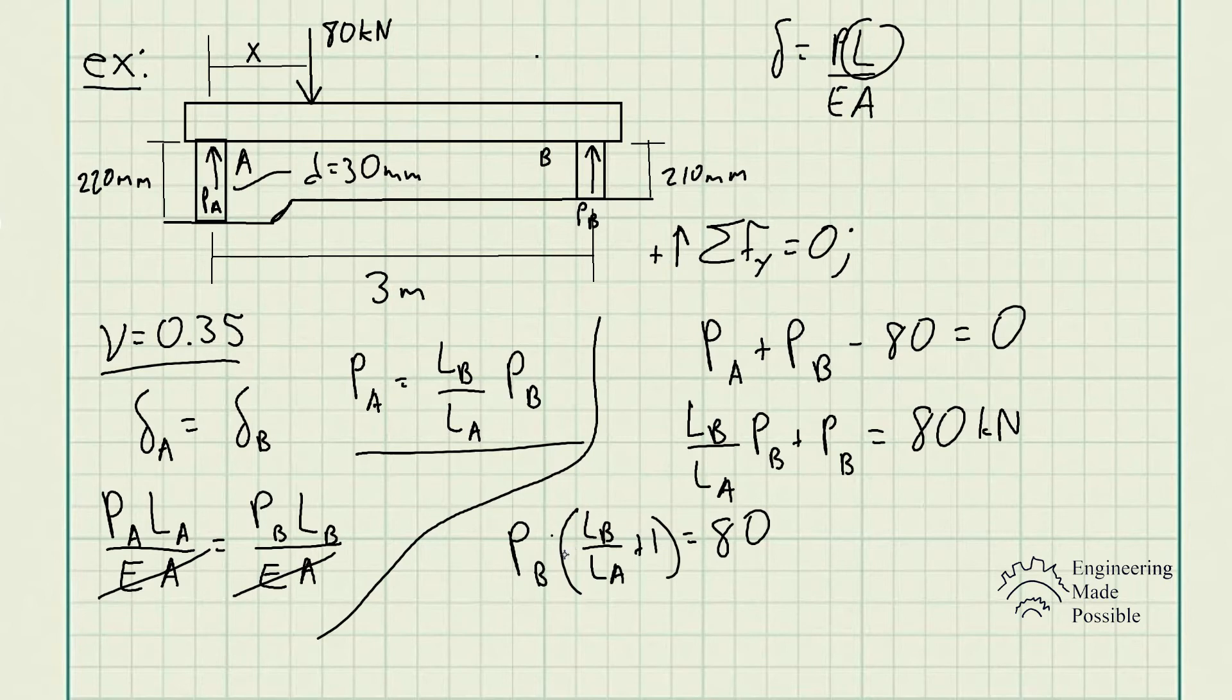And we could just plug in the relationship that we have before to solve for the forces here. So once we factor out the P_B, we get L_B over L_A plus one is equal to 80. Now divide this by both sides to solve for P_B and we end up getting 40.93 kN.